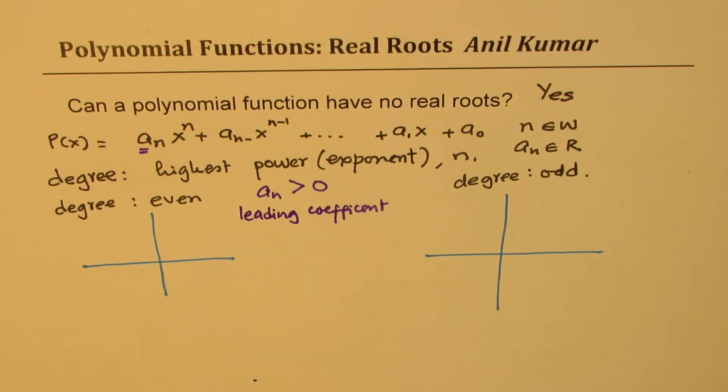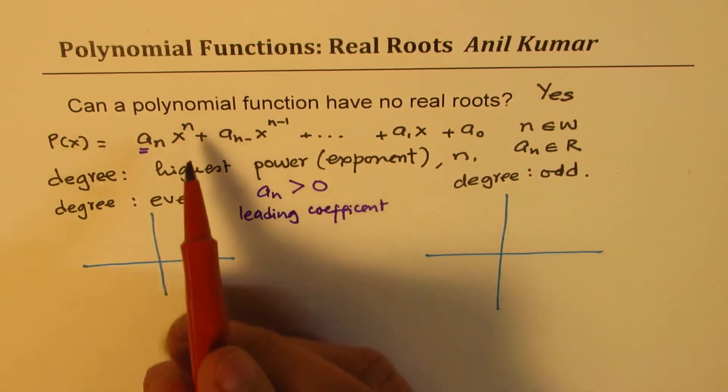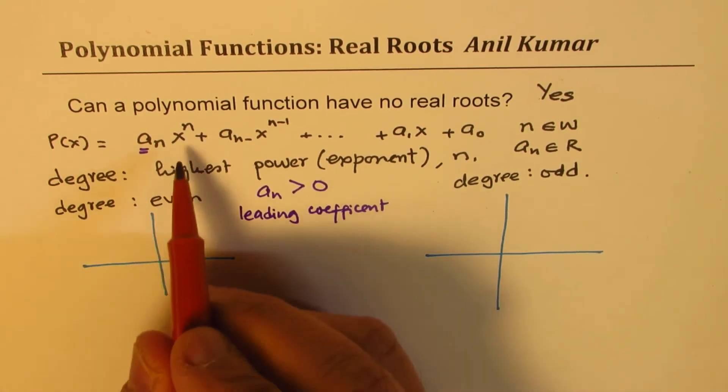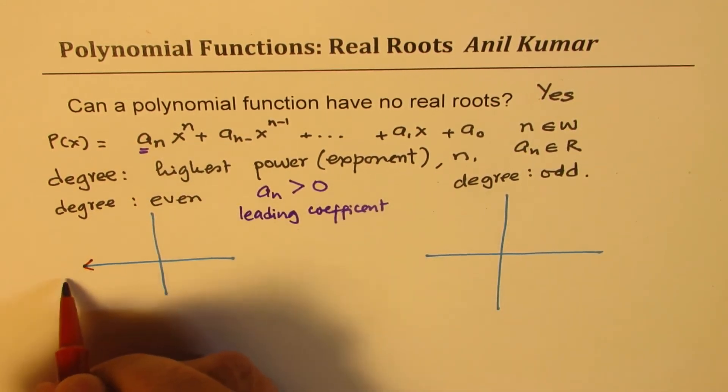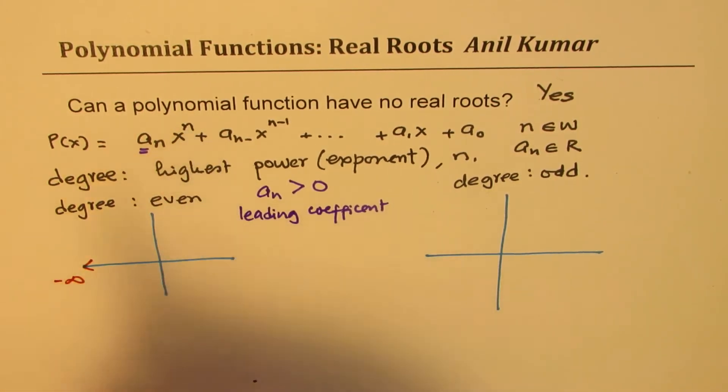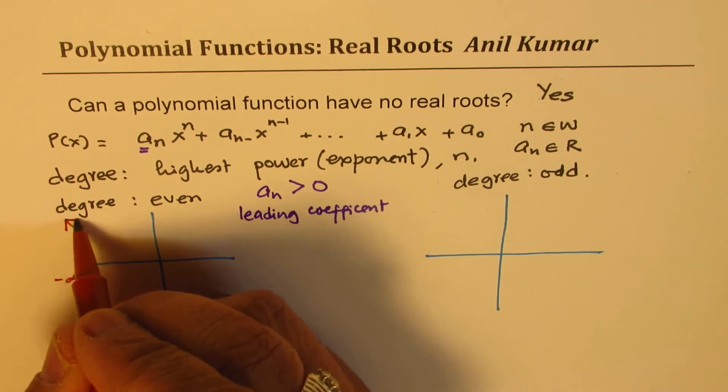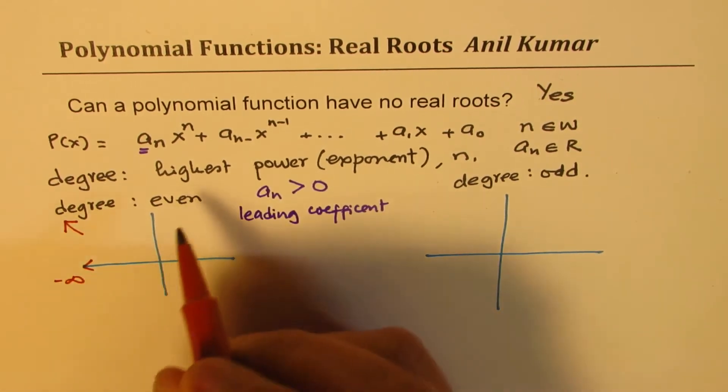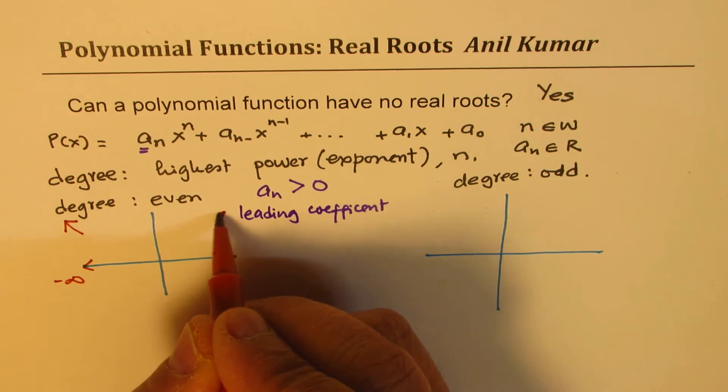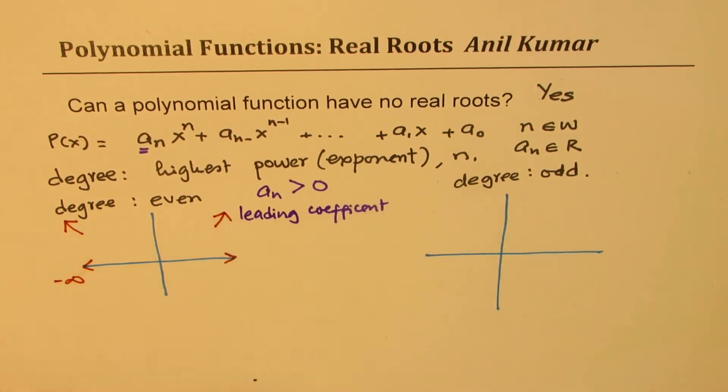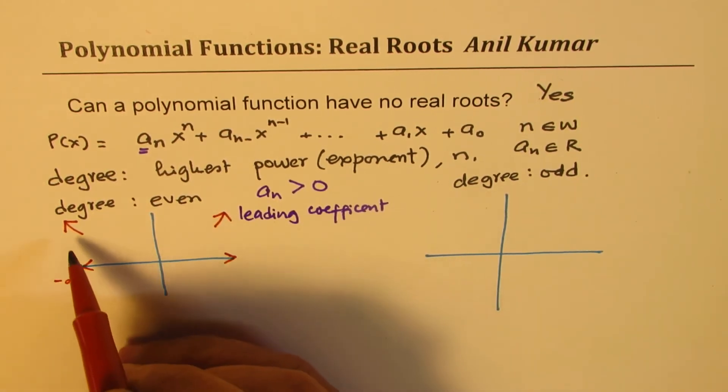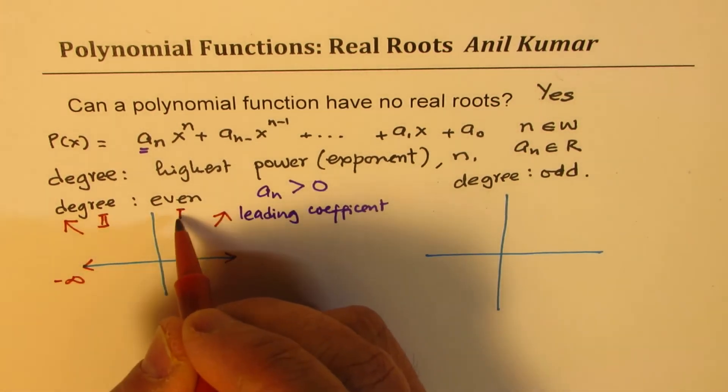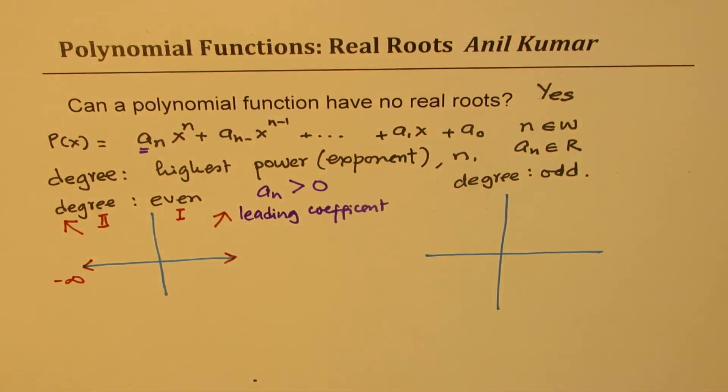Now if the degree of the polynomial is even, if I am looking into any x value which is negatively large, that even value makes it positive, so the graph will be kind of like this. If the x value is positive, then the end behavior is like this. So basically the graph moves from quadrant two to quadrant one for an even degree polynomial.